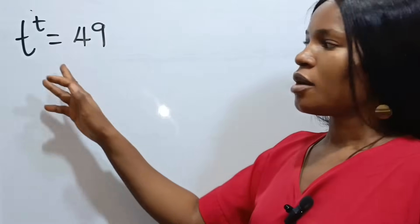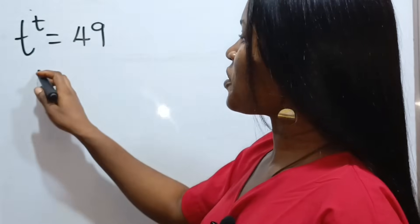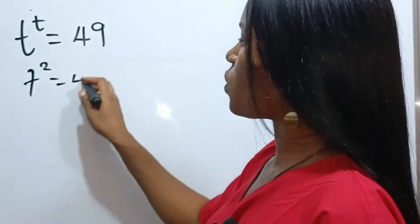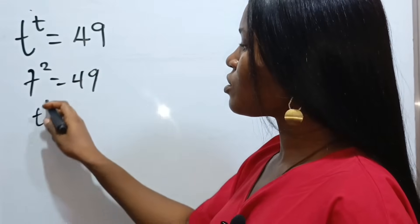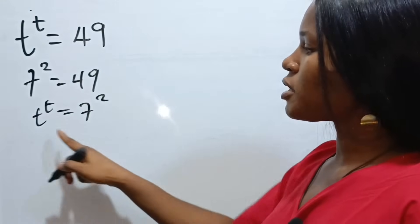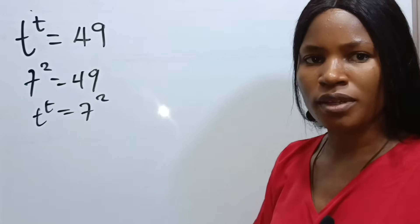Hi, amazing friends. When I saw this, I was like, this is very simple. Now, 7 to the power of 2 is equal to 49. But I want you to look at this very well. You will see that t to the power of t is not equal to 7 to the power of 2. This means that both the base and the power should be the same.